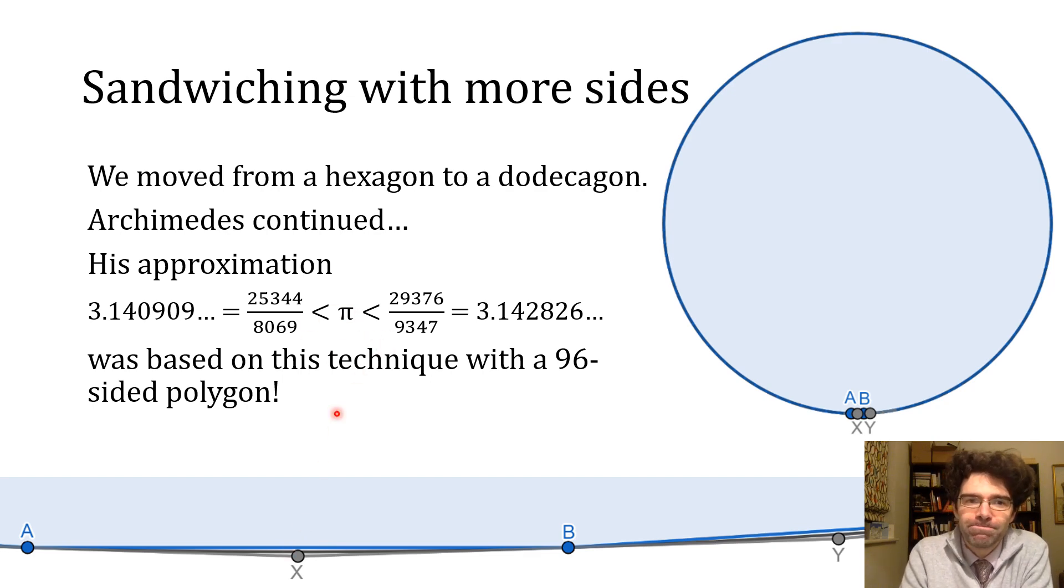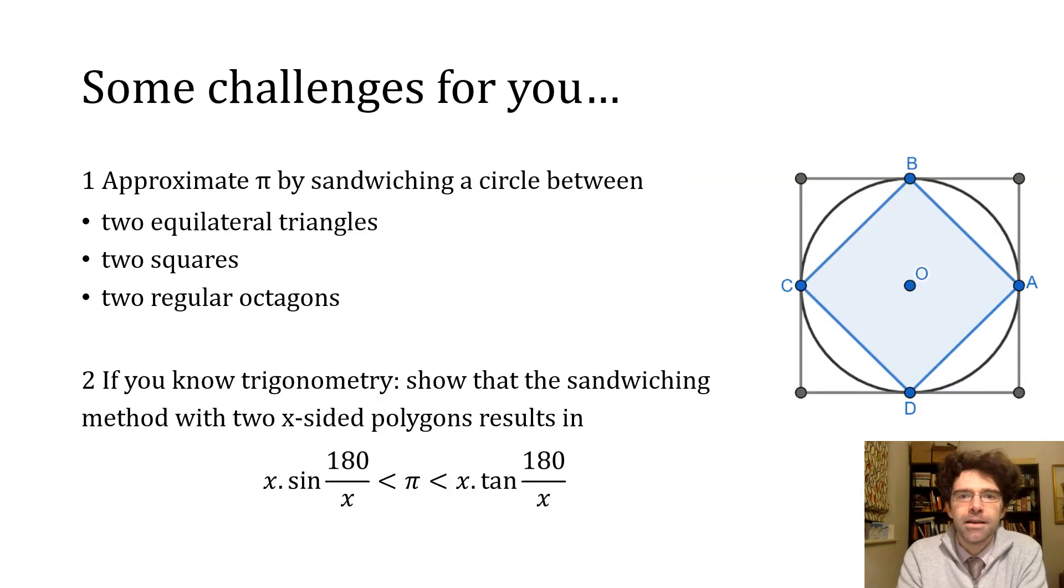Well this brings me more or less to the end of my talk, but I just wanted to leave you with a couple of challenges. So first one is try using this method of sandwiching with some other shapes, so try two equilateral triangles, try a couple of squares like in the diagram here, and try two regular octagons. And in each case try and get an exact figure for the perimeter of the polygons involved and then work out what it tells you about the value of π.